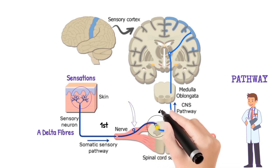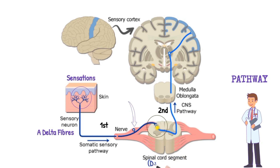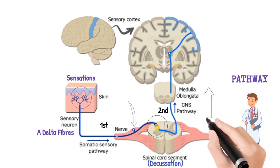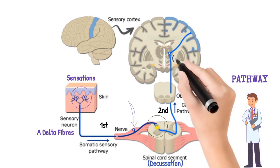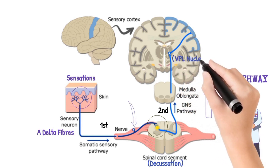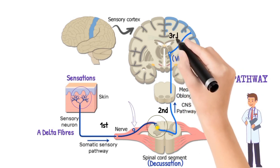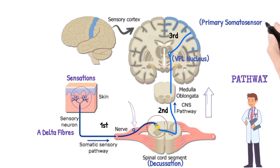Here, second order neurons originate and decussate immediately via the anterior white commissure. These fibers then ascend upwards as the lateral spinothalamic tract of the contralateral side. These second order neurons terminate in the ventroposterolateral nucleus — the VPL nucleus — of the thalamus. Here, third order neurons originate and carry sensations upward towards the primary somatosensory cortex of the brain.